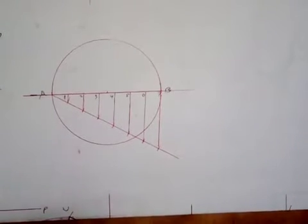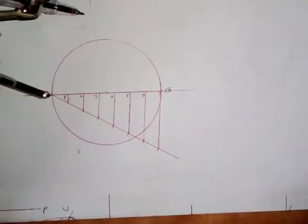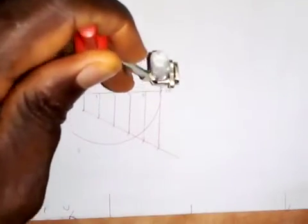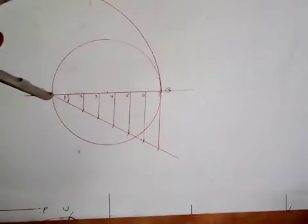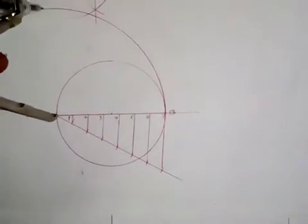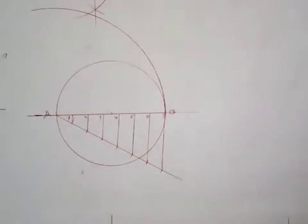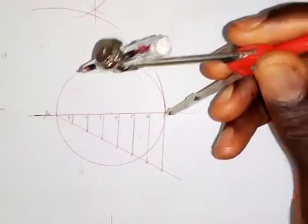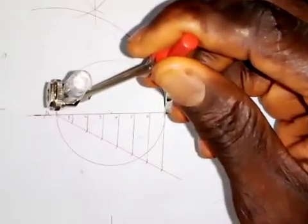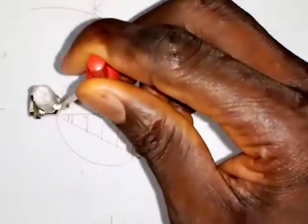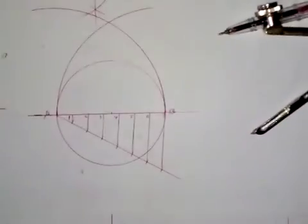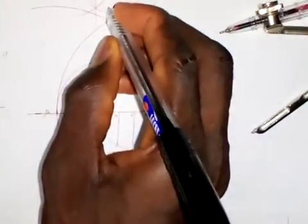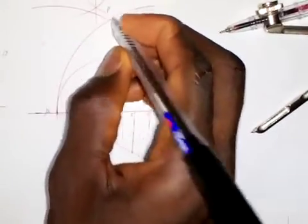The next thing I'm going to do is take my compass, put the pin point at A, and extend to B. Then I'm going to draw an arc upward like this. Then I will take the same radius, put the pin point at B so it touches A, and draw an arc like this. The arcs intersect at this point, which I will call point P.